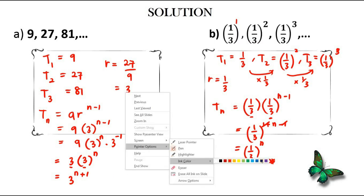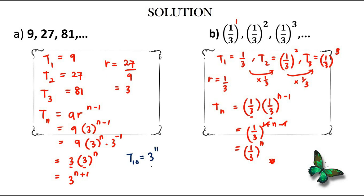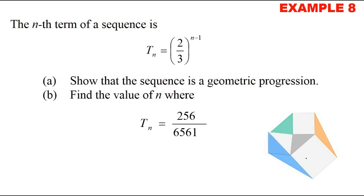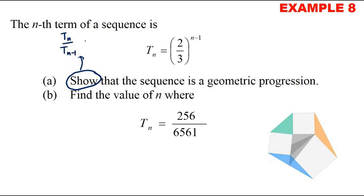Now determine the 11th term. For the first sequence, t11 = 3^(11+1) = 3^12... actually t11 = 3^11, giving 177,147. For the second sequence, t10 = (1/3)^10 = 1/59049. We also need to show that a given sequence is a geometric progression by proving that tn/tn-1 equals tn+1/tn, confirming consistent common ratio.